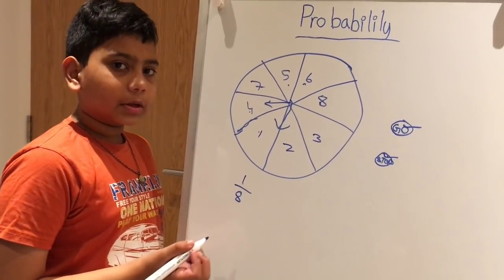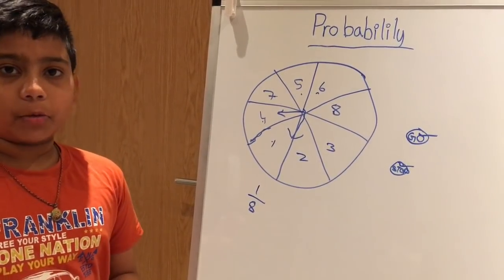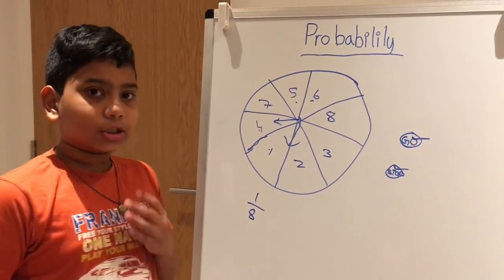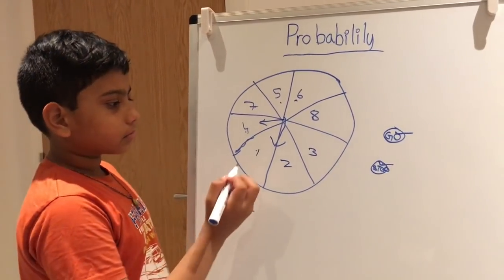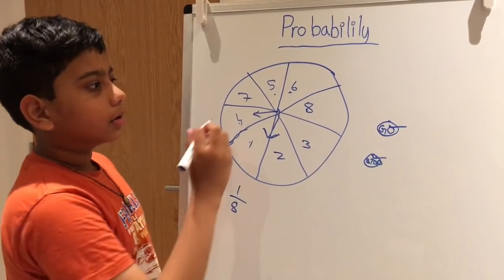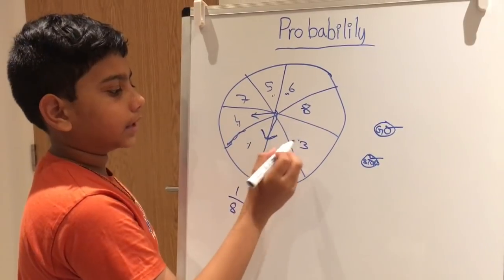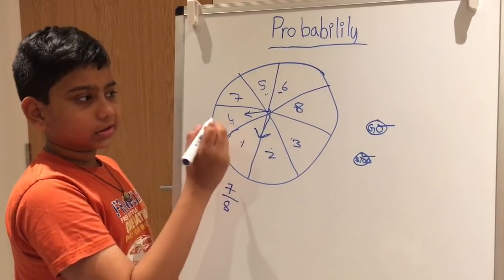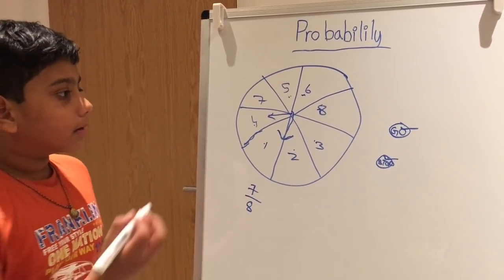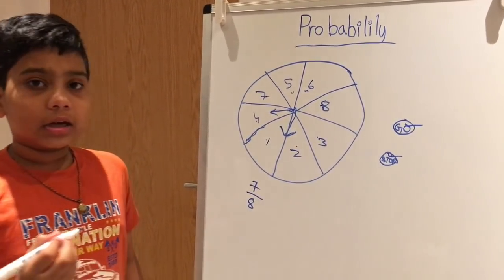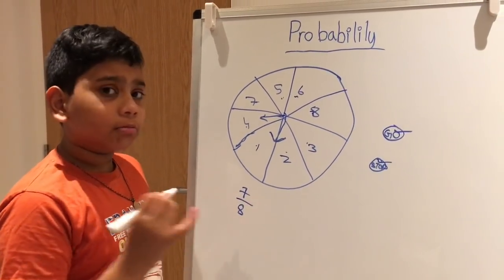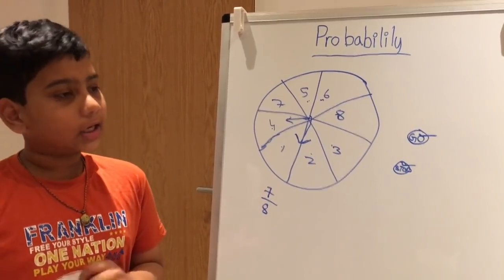One over eight falls in the unlikely zone on the probability line, but it's not impossible because there is still a one over eight chance to get four. Now, what's the chance to get all numbers except four? Counting the remaining numbers: one, two, three, five, six, seven, eight — that's seven numbers. So the probability is seven over eight, which is very likely, almost certain, but not certain because there's still a one over eight chance of landing on four.